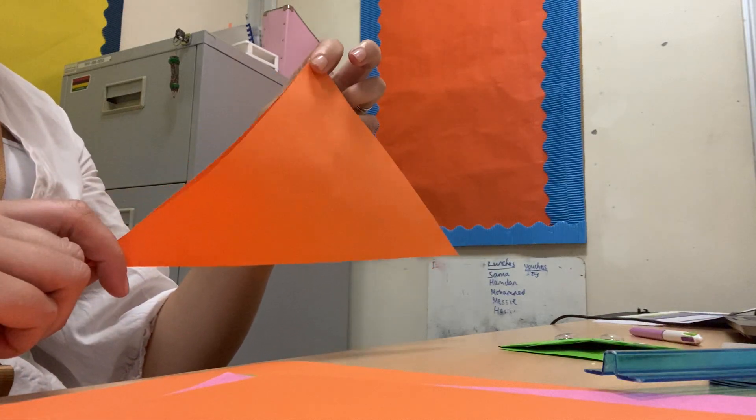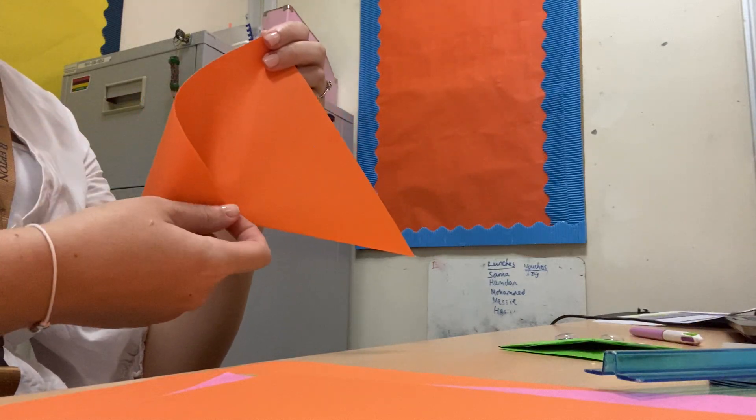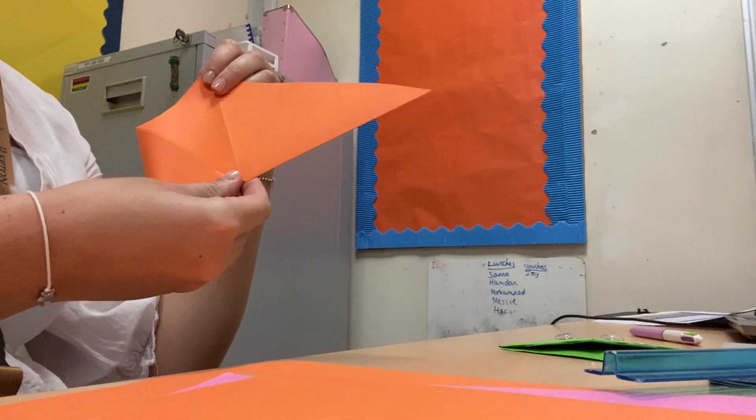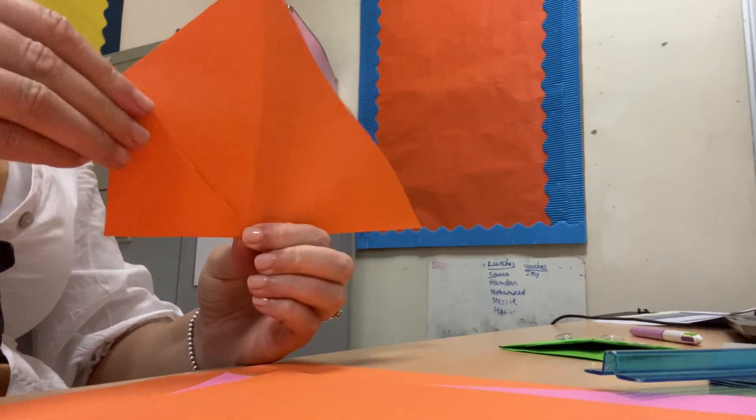You then fold it back up until you have your triangle. First step is to take this corner, fold it until it meets the middle line. So it meets my middle line. Then I'm going to press it down.